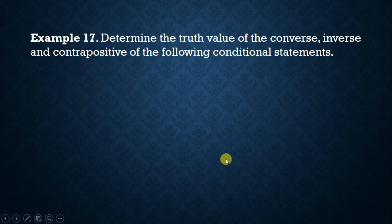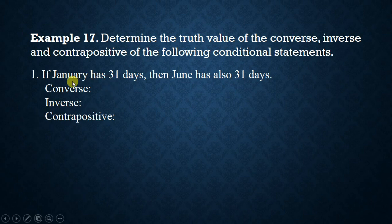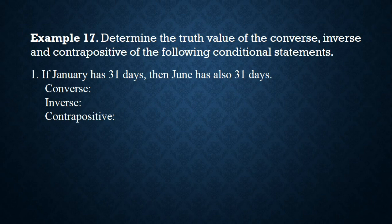Example: determine the truth value of the contrapositive, inverse, and converse of the following conditional statements. Number one: if January has 31 days, then June also has 31 days. Observe that P is true but Q is false. So referring to our truth tables, the converse is true, the inverse is true, and the contrapositive is false.